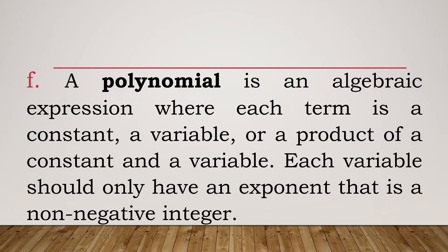A polynomial is an algebraic expression where each term is a constant, a variable, or a product of a constant and a variable. Each variable should only have an exponent that is a non-negative integer. We call an algebraic expression a polynomial when all the exponents of variables are non-negative integers. Let's look at the rules we need to follow.